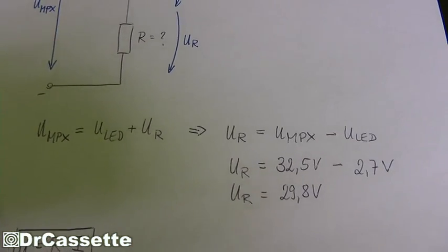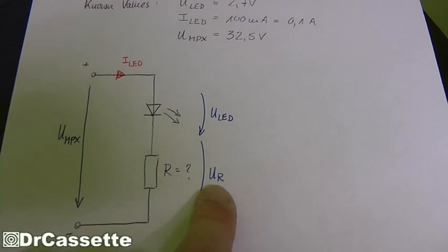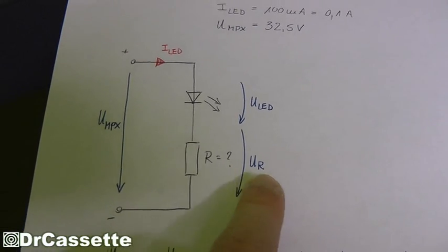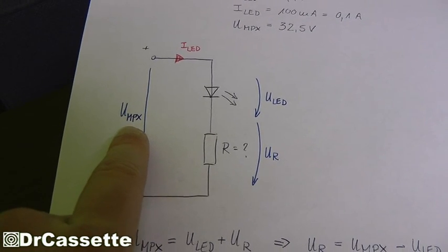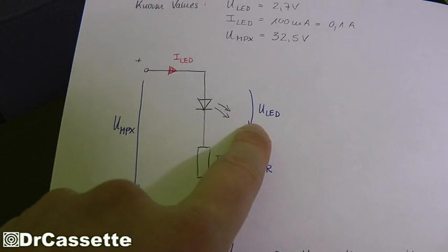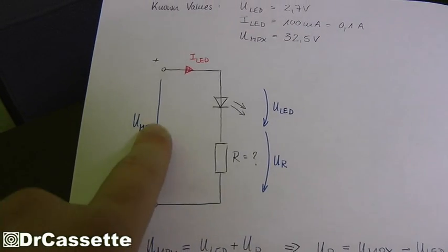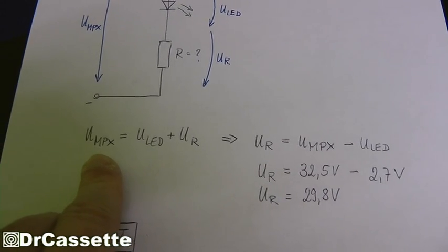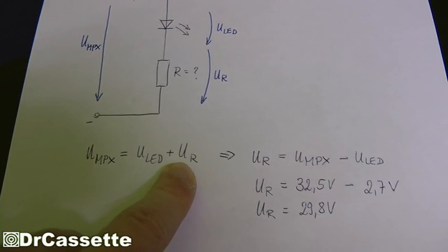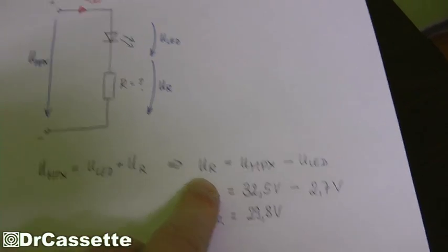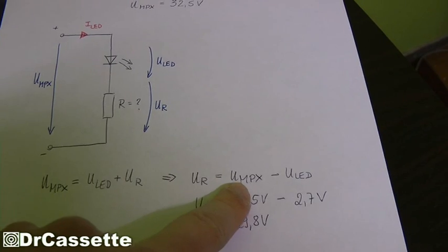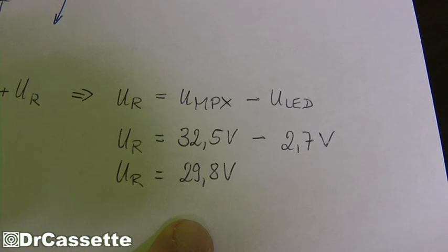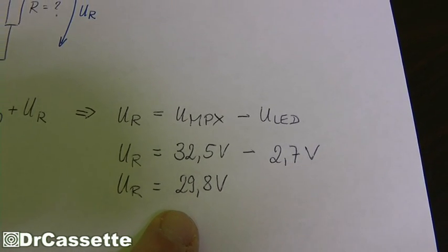Now first of all, you go ahead and calculate the voltage that is measurable across the resistor, because you now have both the UMPX and the ULED. And since the voltage that is flowing right there also has to flow right there, it's rather simple. UMPX equals ULED plus UR. And that, of course, gives you that UR is UMPX minus ULED. So do some calculating with the values and you'll end up with 29.8 volts.